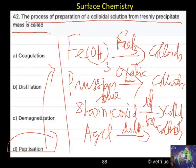Conversion of ferric hydroxide into colloids using ferric chloride. Conversion of Prussian blue by adding oxalic acid into colloids. Conversion of stannic oxide in presence of dilute HCl to colloids. Silver chloride sol converted into colloids by dilute HCl. So this is called peptization.